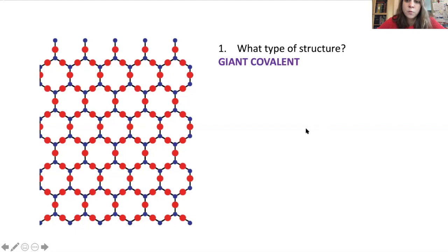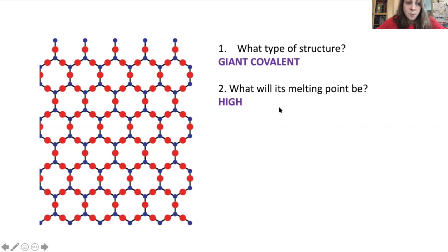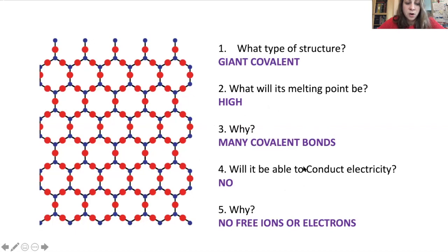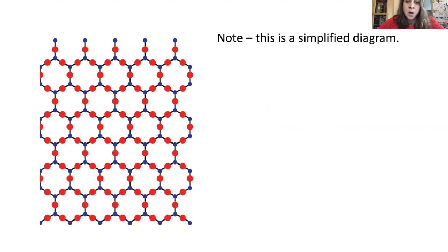How did you get on? Question one, what type of structure? It's a giant covalent structure - you remember these lines like we drew with graphite and diamond, this giant covalent structure. If there's a giant covalent structure like diamond or graphite, it's going to have a really high melting point. Why? Because it's got loads of covalent bonds, so to overcome these bonds - all of these black lines, those pairs of electrons - that's going to need a lot of energy. Will it be able to conduct electricity? No, because there are no free ions or electrons that could move around and carry a charge.